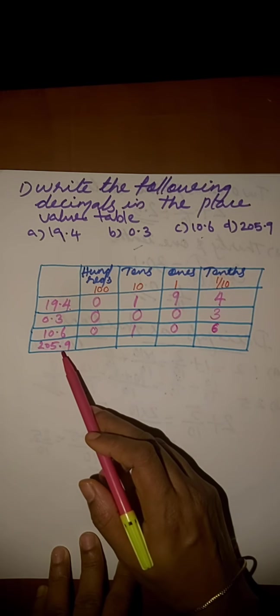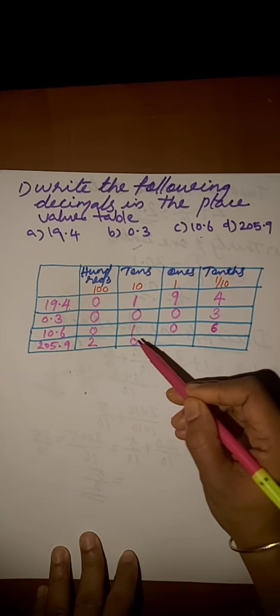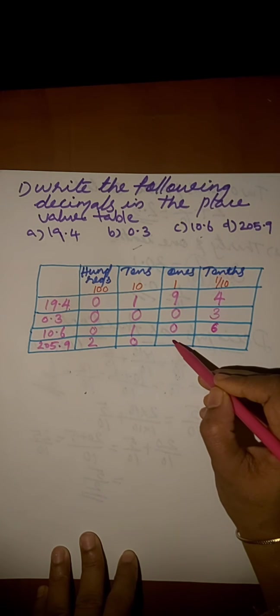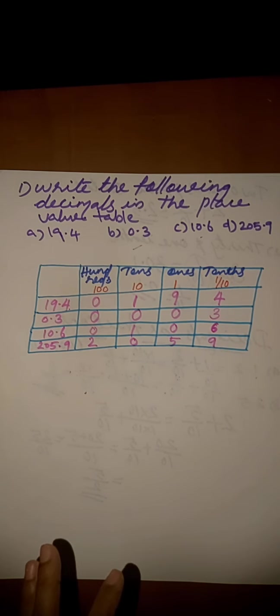Next, 205.9. Hundreds place is 2, tens place is 0, ones place is 5, tenths place is 9.